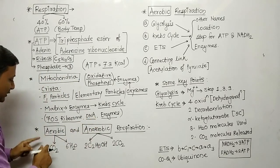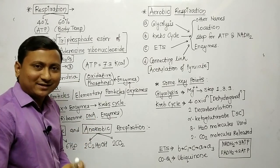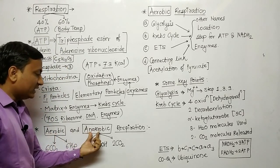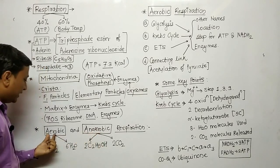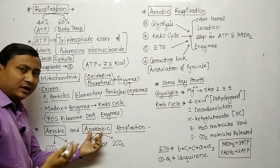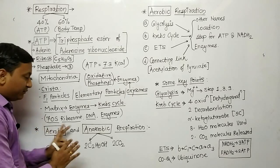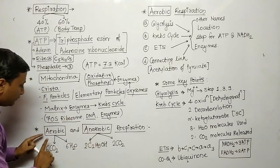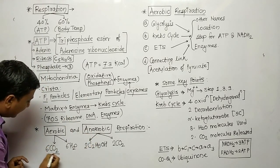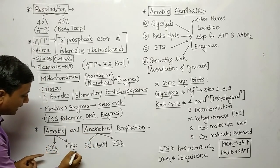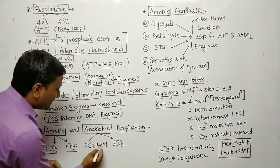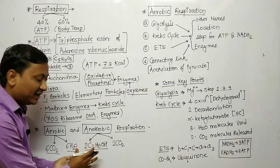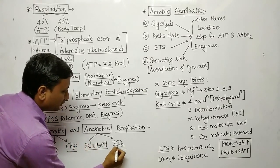The next point is types of respiration: aerobic and anaerobic. Aerobic respiration occurs in the presence of oxygen, while anaerobic occurs in the absence of oxygen. Aerobic occurs in higher organisms, anaerobic in lower organisms. Aerobic gives a huge amount of energy while anaerobic gives less energy. The aerobic end product is 6 molecules of CO2 and 6 molecules of water. The anaerobic end product is 2 molecules of C2H5OH — that is ethyl alcohol, also called ethanol — and 2 molecules of CO2.